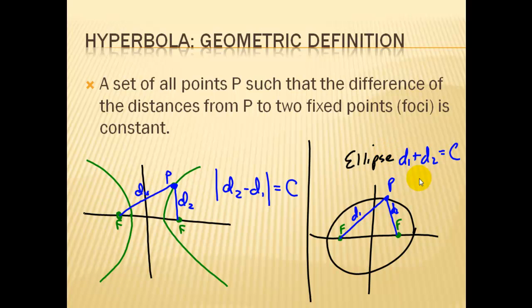Contrast this to what we talked about in the last video about ellipses. In that case, the sum of the distances between the point and the two foci was a constant. In this case, it's a difference.